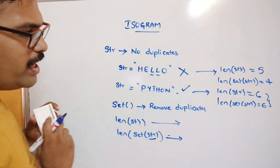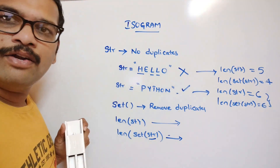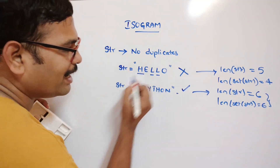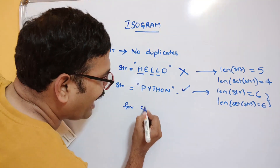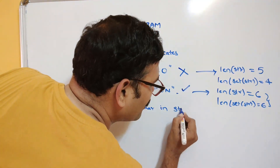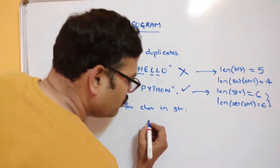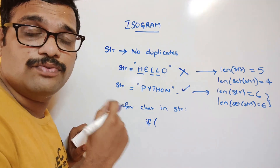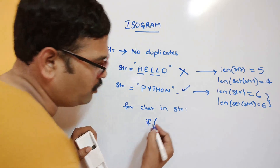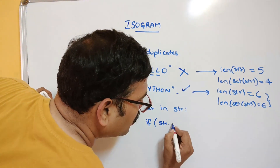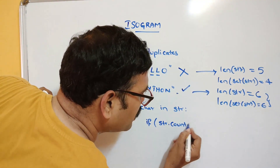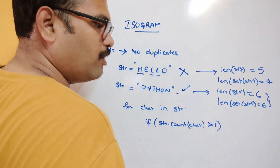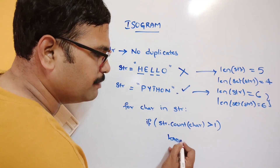The second way is to iterate each and every element of the string. For each character in the string, find out the count using the string count method, which counts the number of occurrences. If str.count(character) is greater than one, simply break the loop.